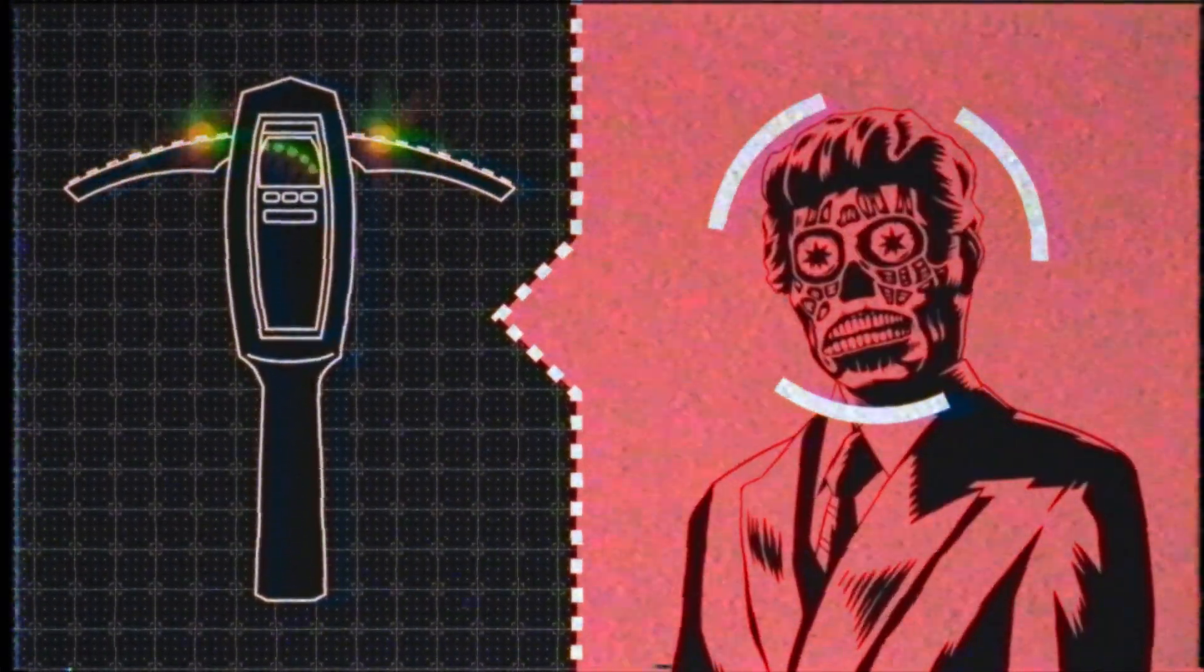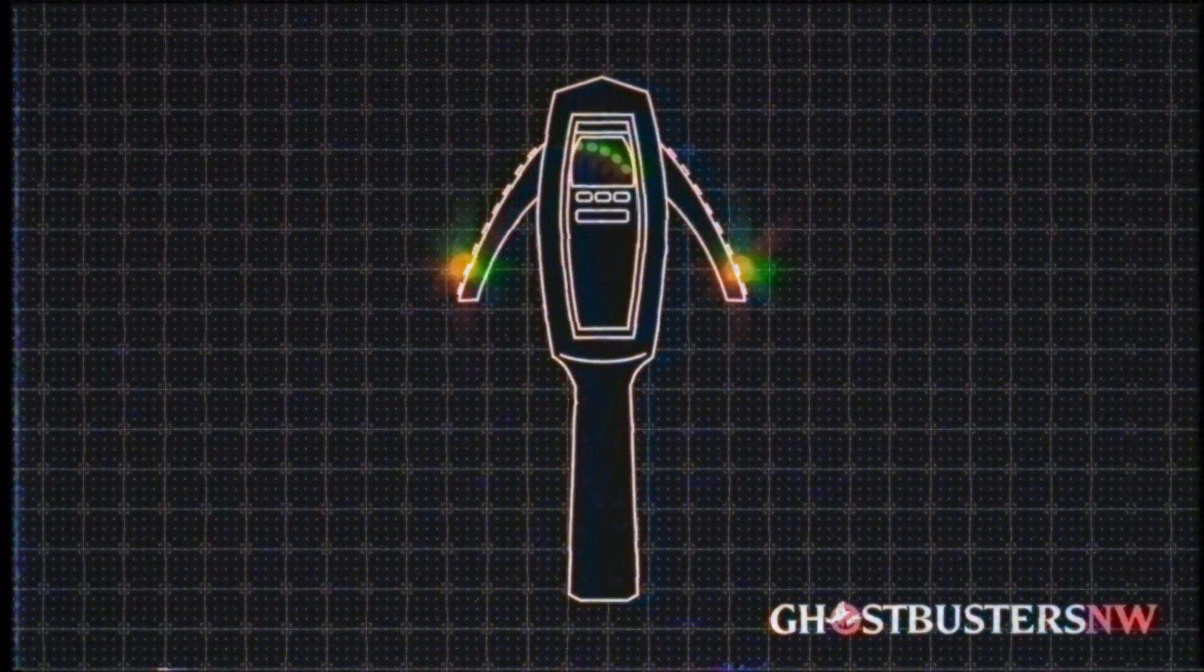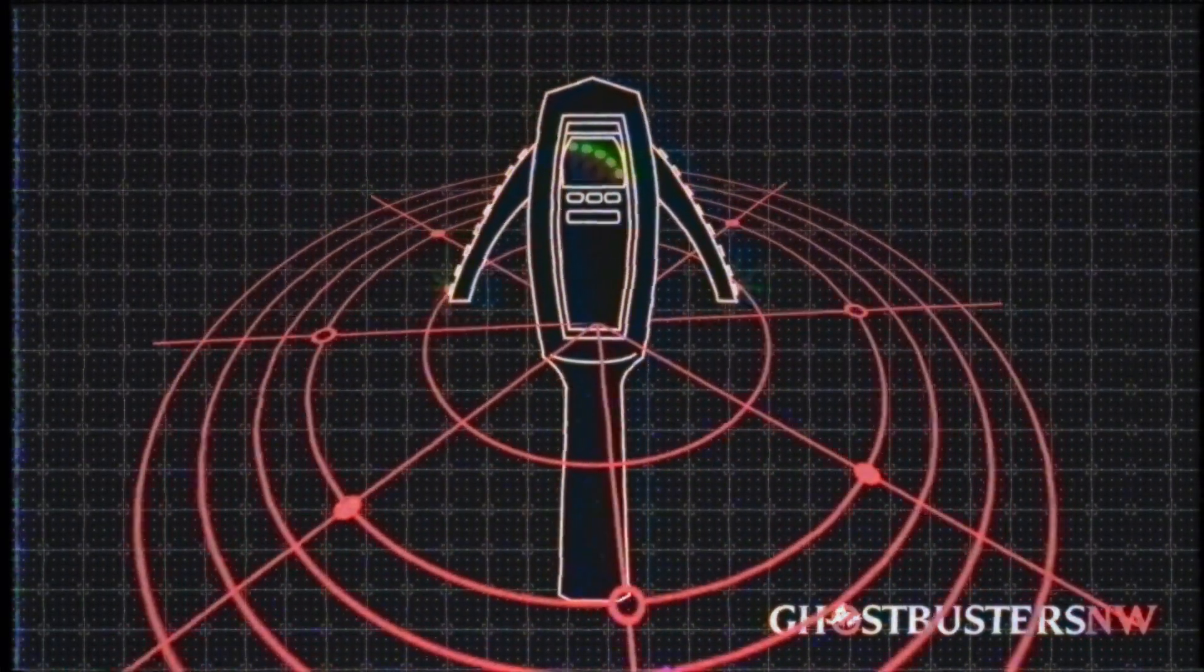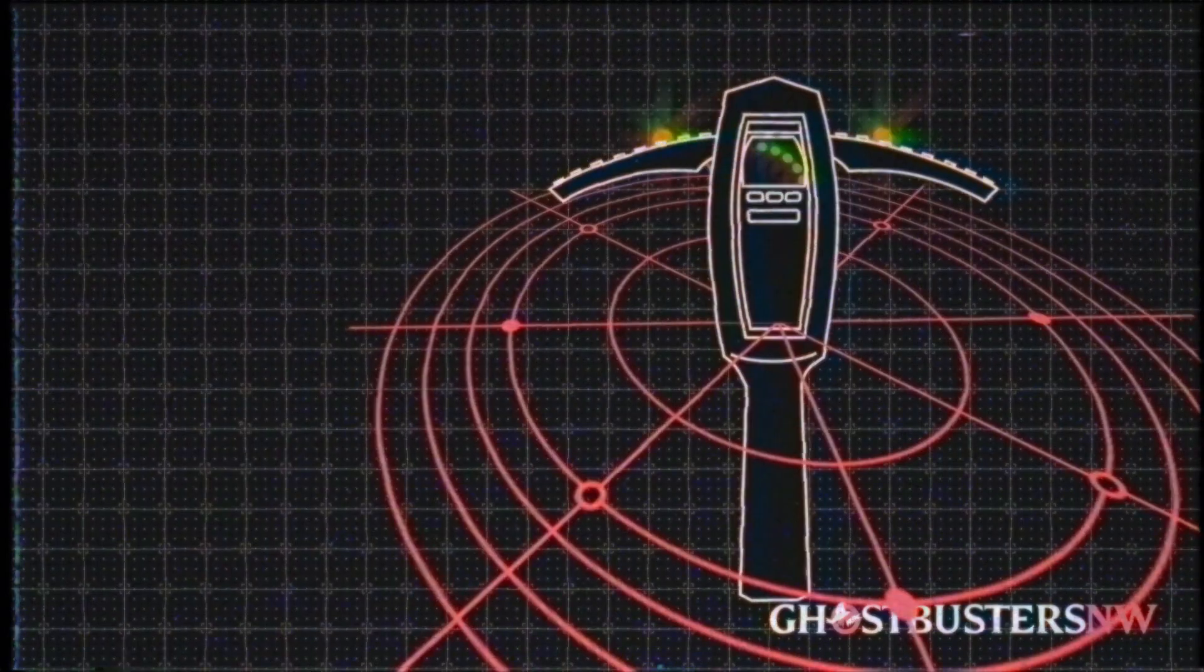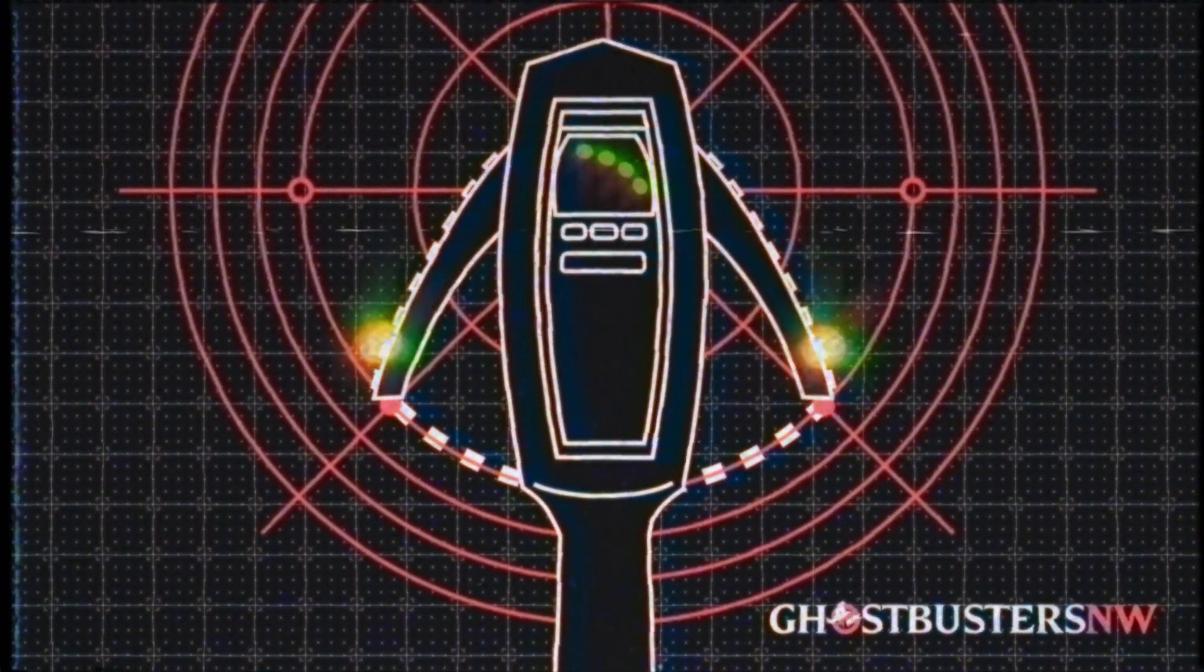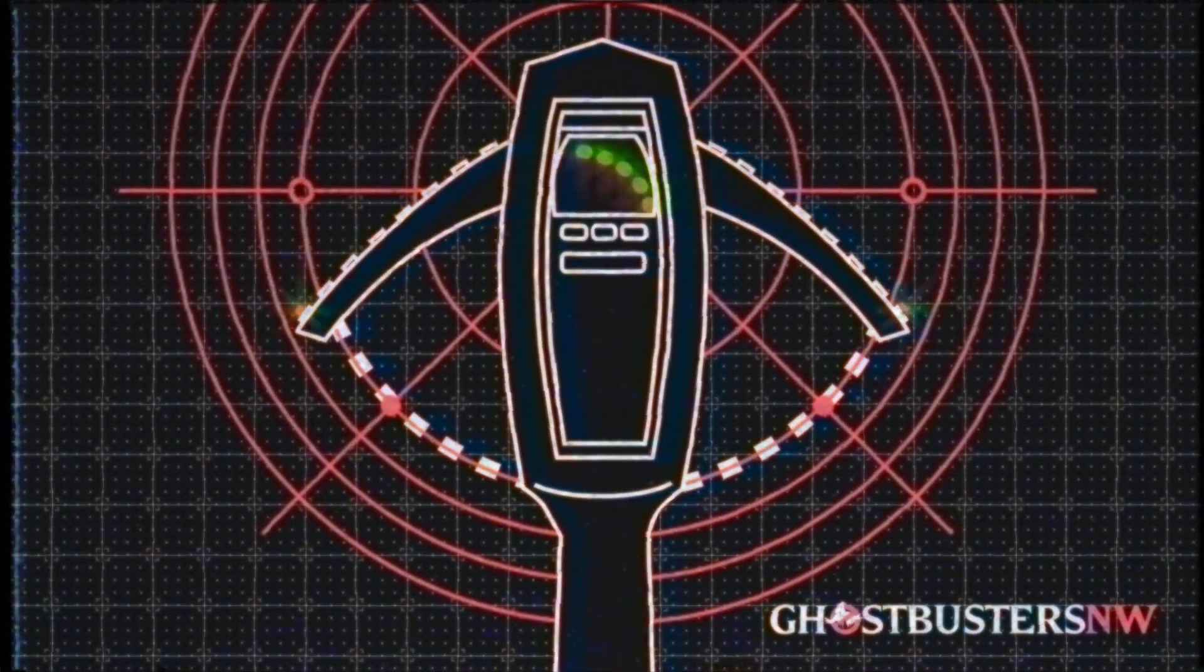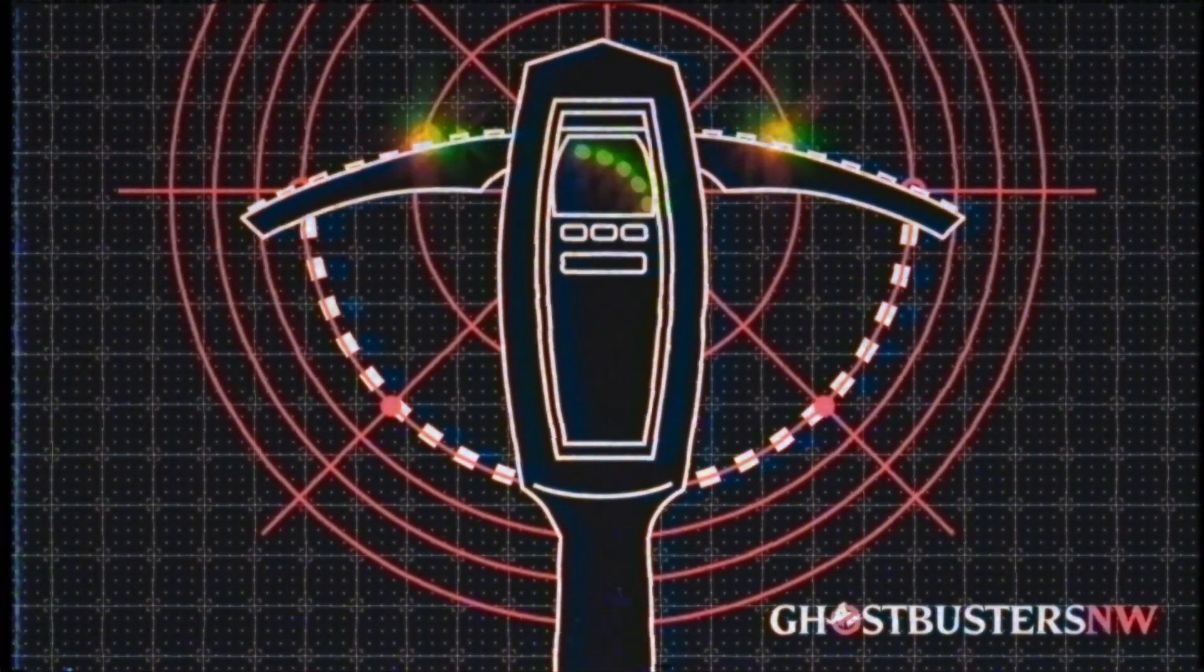After selecting a proper mode, the PKE meter is operated much like a radiation detector by slowly orienting the device in different directions until a spike is detected. This will be indicated by movement of the sensor wings as well as audible beeps and flashing LEDs. The closer you get to the manifestation, the higher the wings and the faster the beeps and flashes, reaching maximum levels when the PKE meter looks like a disco crucifix.